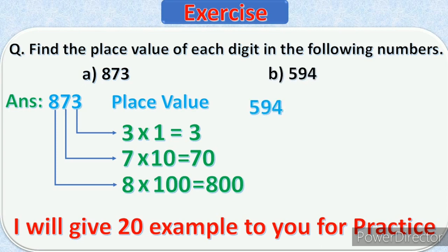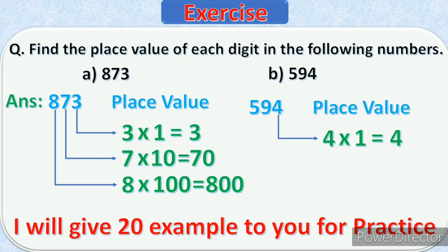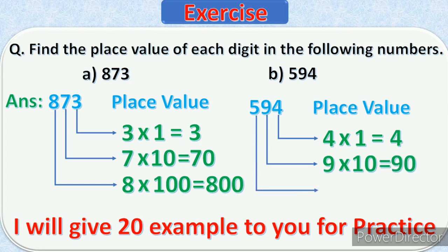Now we will solve the second example. We will write the number and its place value. We will find the place value of 4 — 4 is at the 1's place, so 4 into 1 equals 4. Place value of 9 — 9 is at the 10's place, so 9 into 10 equals 90. Place value of 5 — 5 is at the 100's place, so 5 into 100 equals 500.